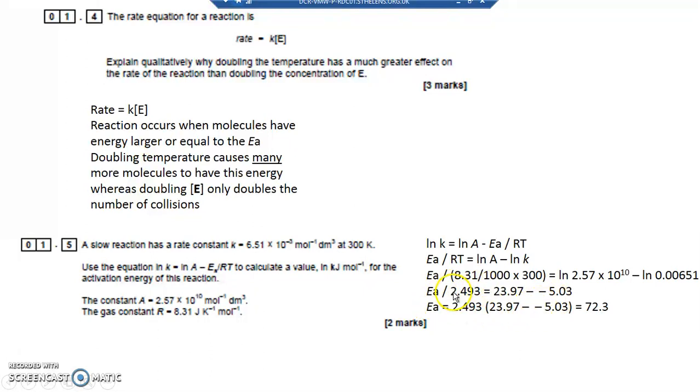And this is divided by on this side, so it's going to be going across the equal sign, it's going to be a multiplier. So activation energy equals 2.493 multiplied by these two numbers now added together, and it'll come out as 72.3 kilojoules per mole.